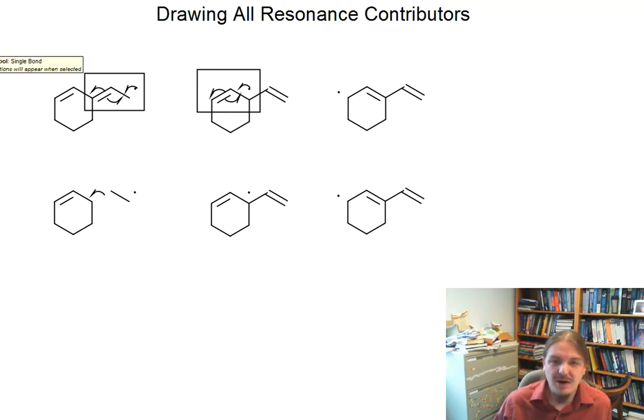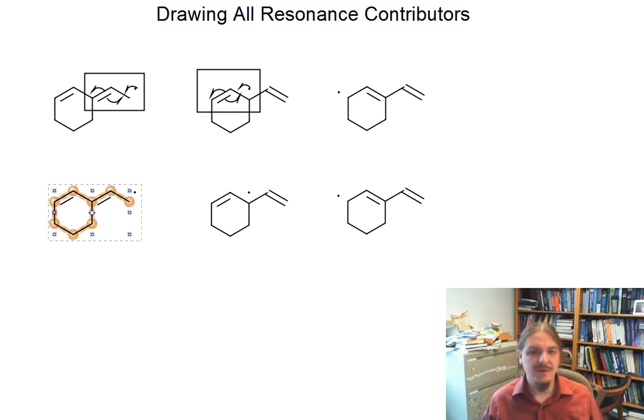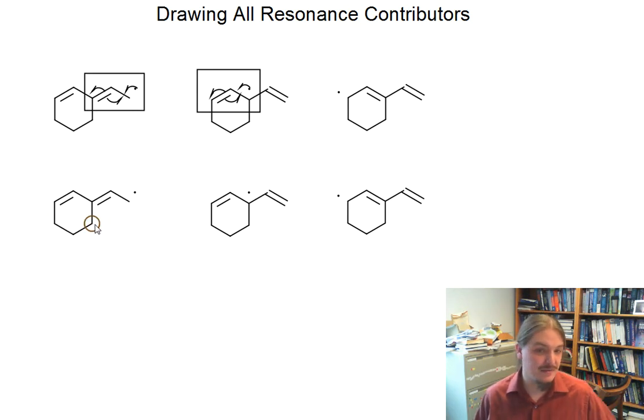You might be wondering why that radical doesn't end up on other spots around the ring. Like why doesn't the radical end up in the three bottom spots around the ring.